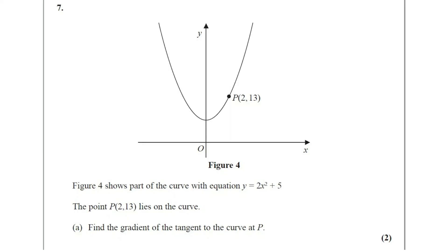Question number 7. You are given a figure. Figure 4 shows part of the curve with equation y equals 2x squared plus 5. The point P of 2, 13 lies on the curve. Part A: find the gradient of the tangent to the curve at point P. The question has two marks.